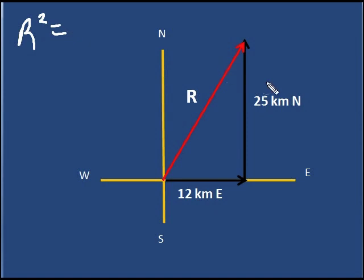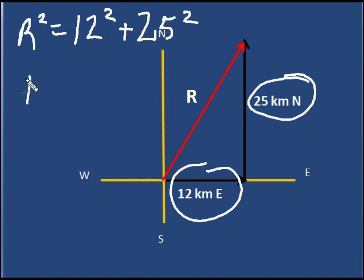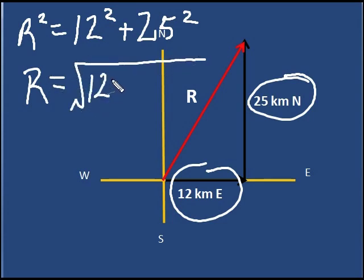And in this context, it's R squared is 12 squared plus 25 squared. So we work this out. R then is equal to the square root of 12 squared plus 25 squared. And when I put it through my calculator, I find that it is 28 kilometers.